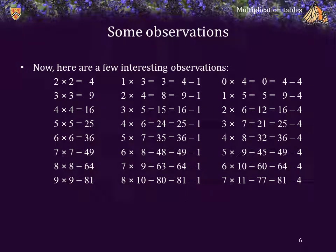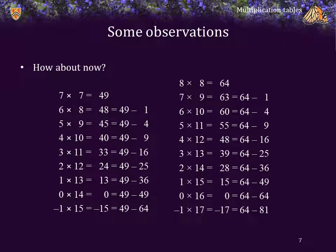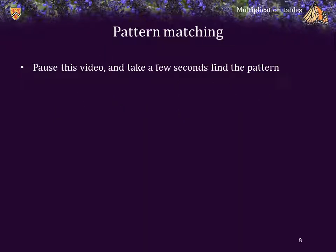Now here are a few interesting observations you might make. Reading each line across: 4 times 4 is 16, 3 times 5 is 15, and 2 times 6 is 12. Or 8 times 8 is 64, 7 times 9 is 63, and 6 times 10 is 60. Do you see a pattern? Pause the video, take a few seconds, and try to determine an algebraic pattern that describes what we're seeing.